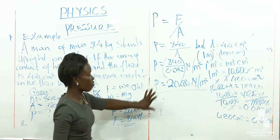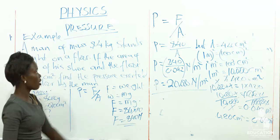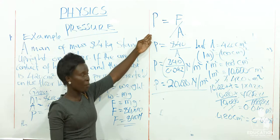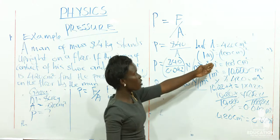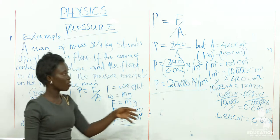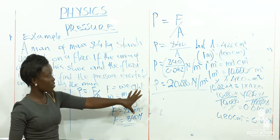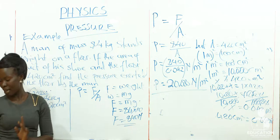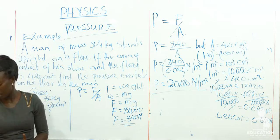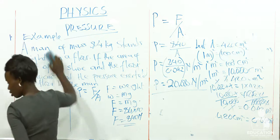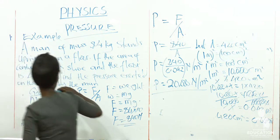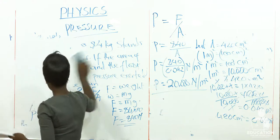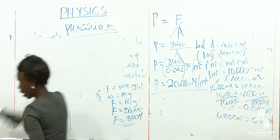That is how you do the calculation for pressure in solid. We have seen how to use the formula and how to convert from centimetres squared to meters squared. Let us look at another example before moving on.